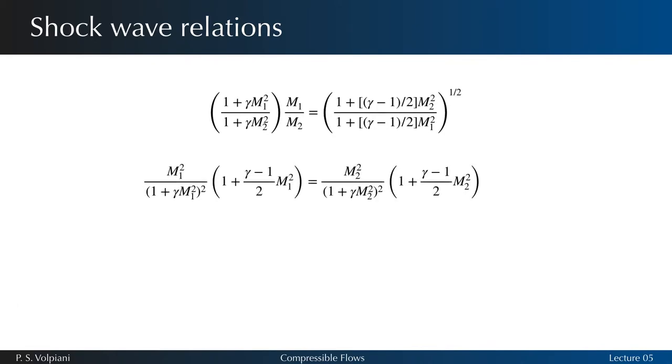This equation is a second degree equation for M2 squared. The first trivial solution is M2 squared equals M1 squared. The second solution reads like this.